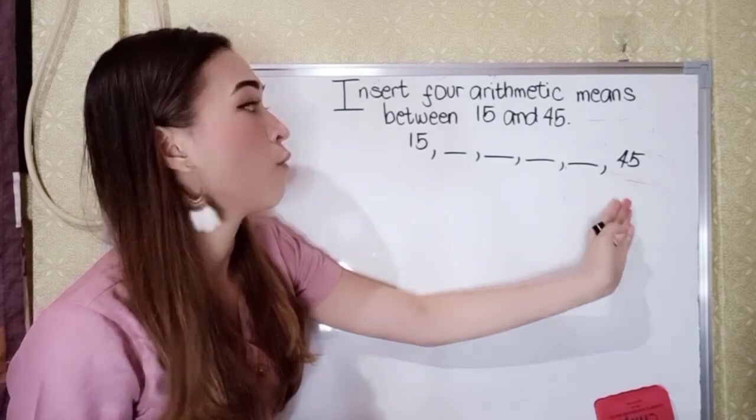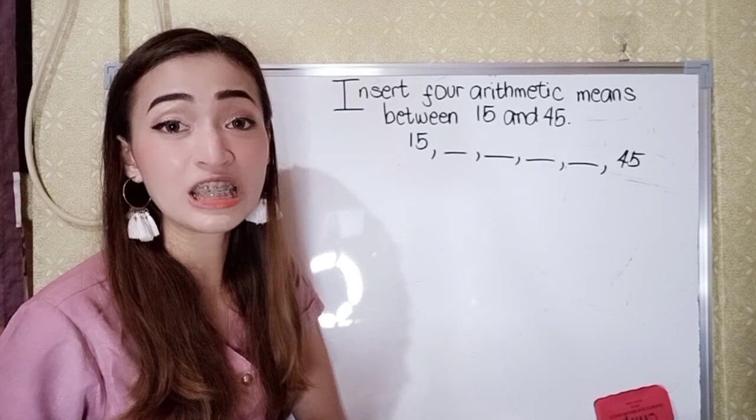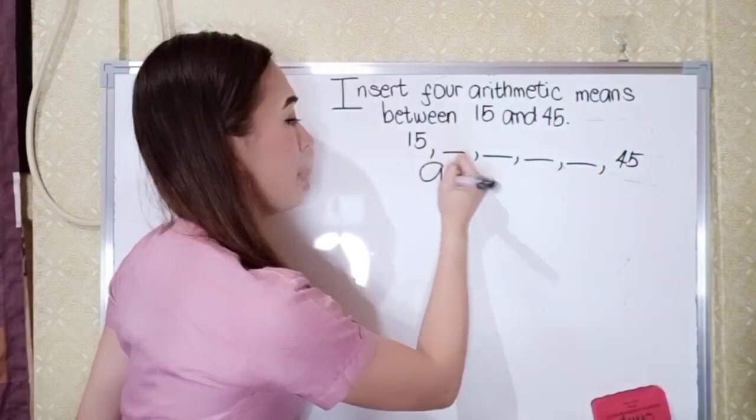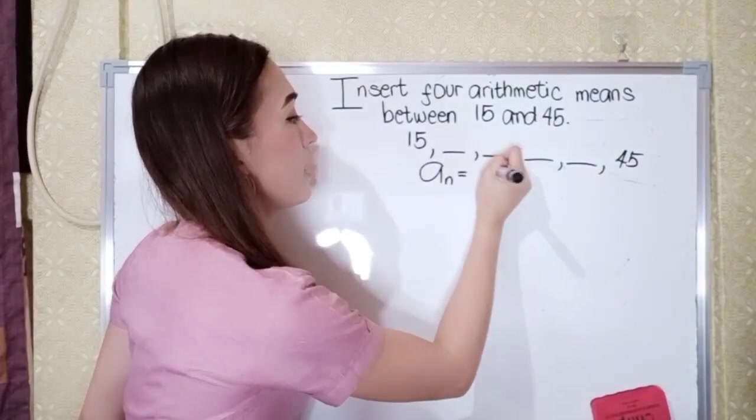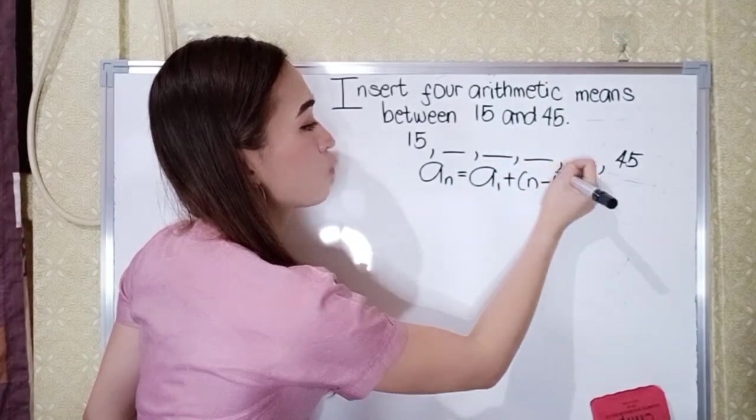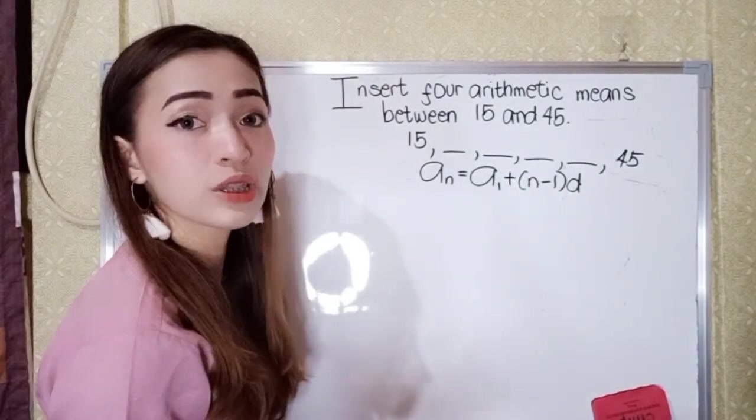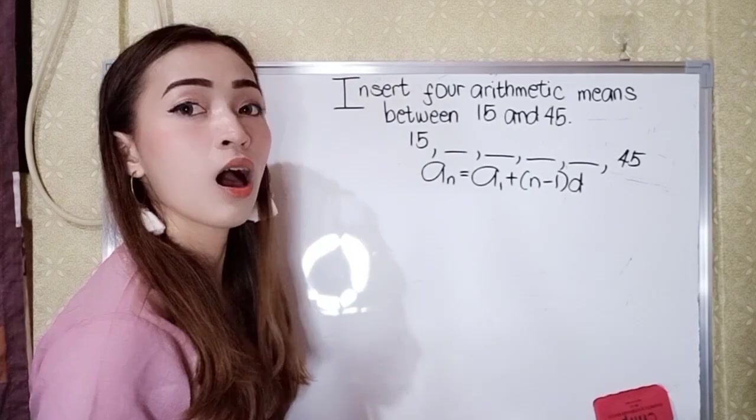To solve this, what you're going to do is to know what is the distance of each number. A sub n equals A sub 1 plus N minus 1 times D. So next is just to substitute the given to the formula.